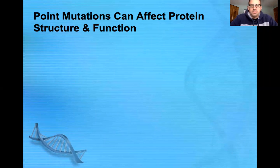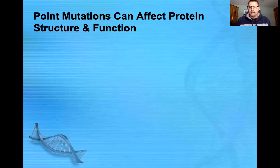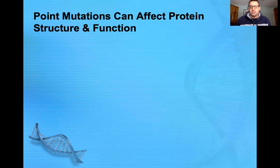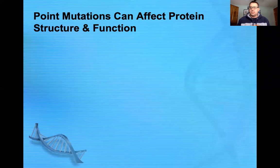The focus of this lecture is going to be on mutations. Mutations are changes that are made to our DNA sequence. There are a lot of different things that can cause mutations — we have mistakes that are made during DNA replication, and we also have all kinds of physical factors that can cause mutations within our DNA. We're going to take a look at a few of the different types of mutations and the results of those mutations.